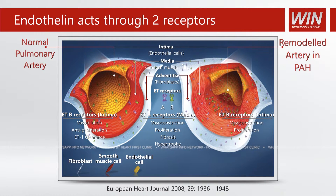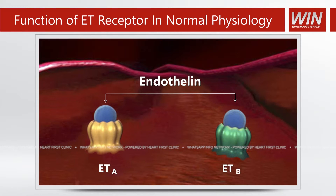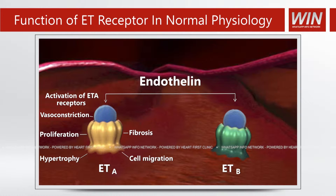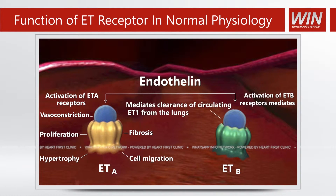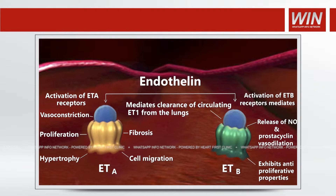There are various pathways in vascular pathophysiology. One of these is the endothelin pathway. Endothelin acts through two types of receptors: the A receptors and the B receptors. Activation of the endothelin A receptor causes vasoconstriction, proliferation, hypertrophy, fibrosis, and cell migration. Activation of the B receptors causes release of nitric oxide and prostacyclin, vasodilatation, and has anti-proliferative properties.